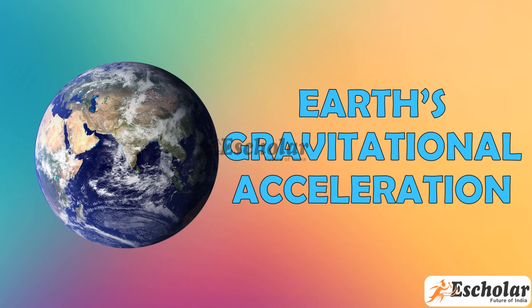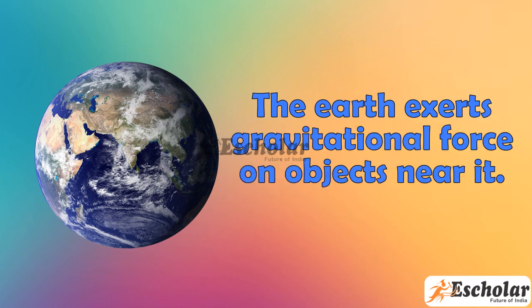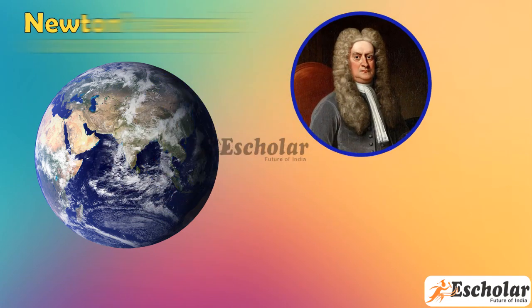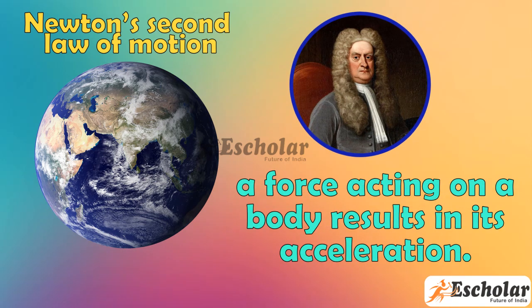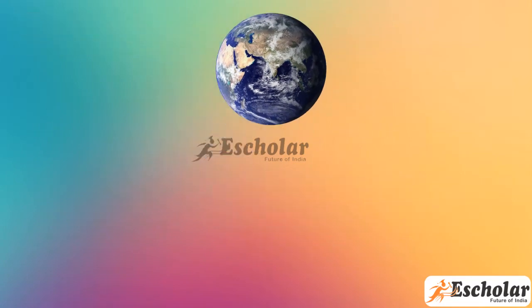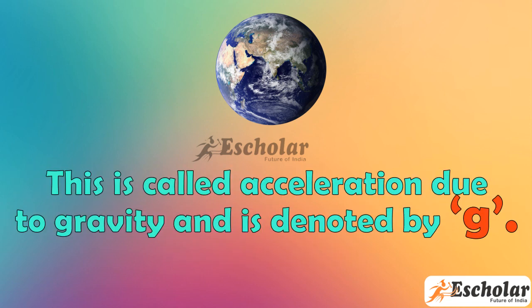Earth's gravitational acceleration. The earth exerts gravitational force on objects near it. According to Newton's second law of motion, a force acting on a body results in its acceleration. Thus, the gravitational force due to the earth on a body results in its acceleration. This is called acceleration due to gravity and is denoted by g.